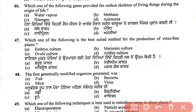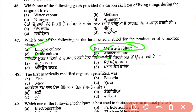Question 47: the best suited method for production of virus-free plants is meristem culture. In meristem culture, single cell division activity is very fast, and at this stage the chance of infection by viruses is minimum, so virus-free plants are maximum. Answer is B.